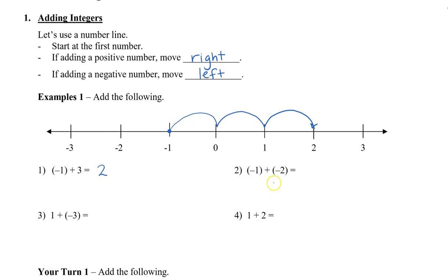If we have negative one plus negative two, we start at negative one again, and this time we're adding a negative number, so we're going to go one, two, and we end up at negative three.